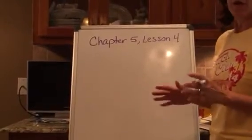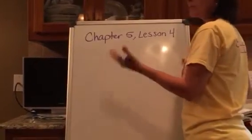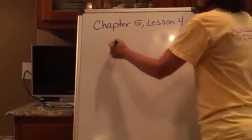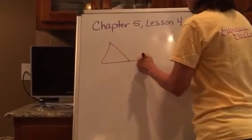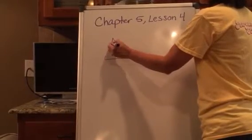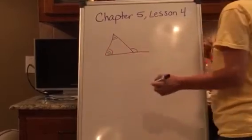Chapter 5 deals with inequalities. We've learned some new axioms and postulates in the first lesson. We've also learned the exterior angle theorem that says an exterior angle is greater than either remote interior angle.